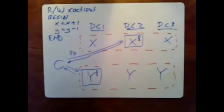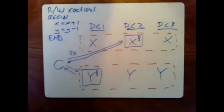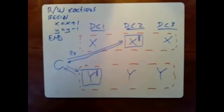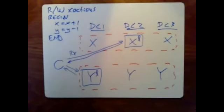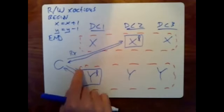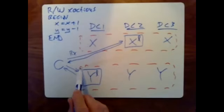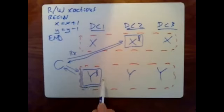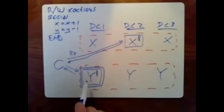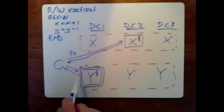Now the client has done all the reads, does internal computations, and figures out the values it wants to write to X and Y. It sends out the updated values for the records all at once at the end of the transaction. First, it chooses one of the Paxos groups to act as the transaction coordinator and sends out the identity of which Paxos group will act as coordinator. Let's assume it chooses the X shard's Paxos group — a double box indicates it's both the Paxos leader and the transaction coordinator.